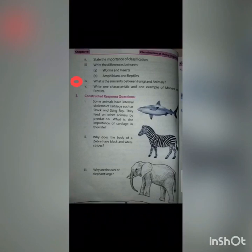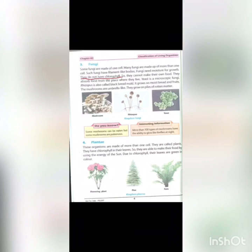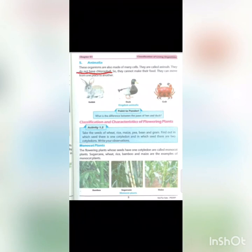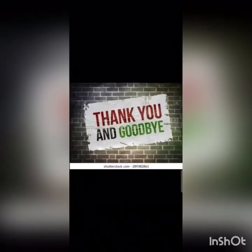At page number 18 of the exercise, the question is: what is the similarity between fungi and animals? This is part 4 of question number 2. The answer is: they do not have chlorophyll. Both fungi and animals lack chlorophyll — that is the similarity between them. This is all for today. Thank you so much and goodbye!